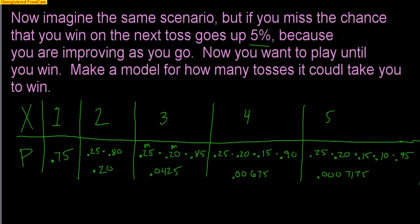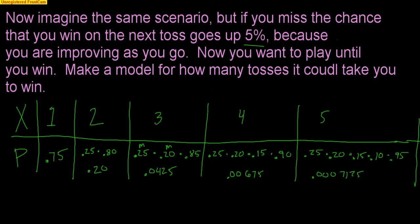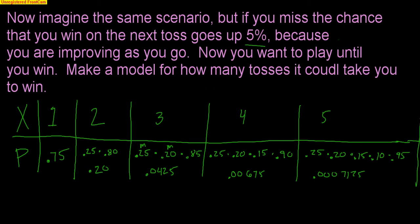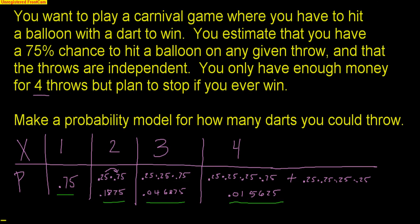This is kind of a cool problem — it's conditional on the fact that the result of the next toss depends on what happened prior, because I'm increasing my chance each time. It's a little different from the first problem where I was just stuck at 75% the whole time. Hopefully this helps you understand probability models a little bit better.